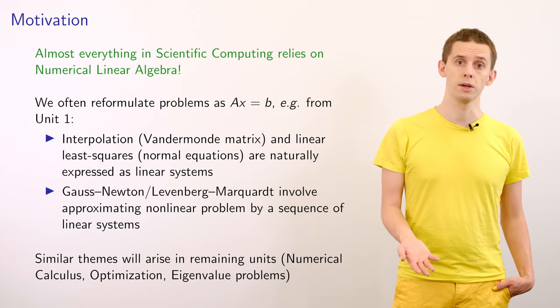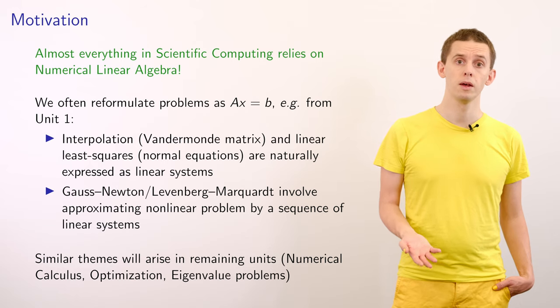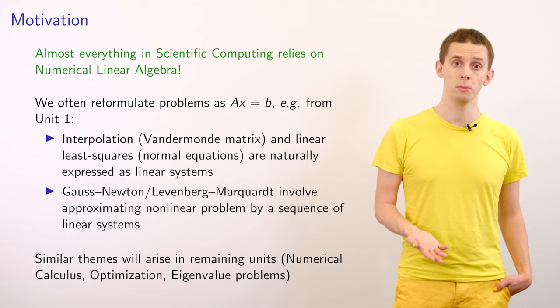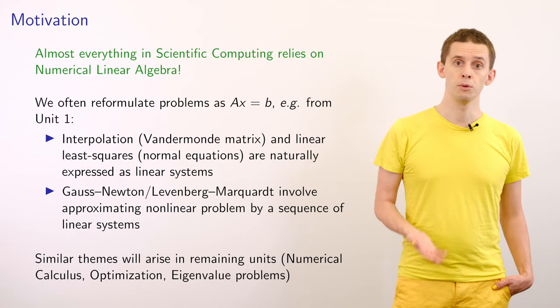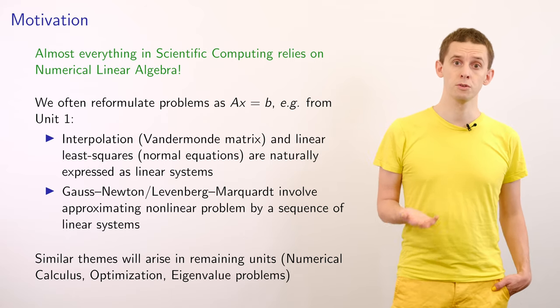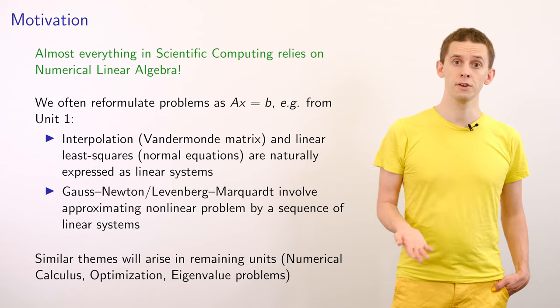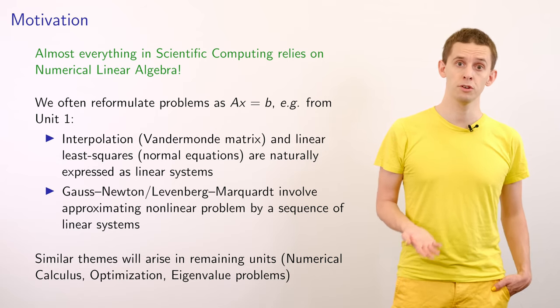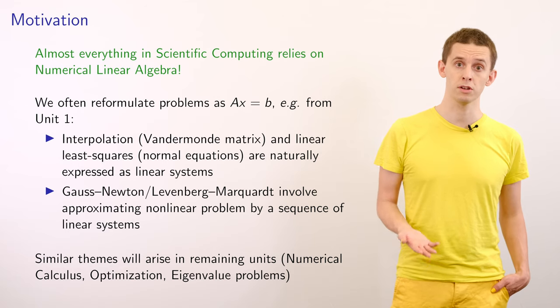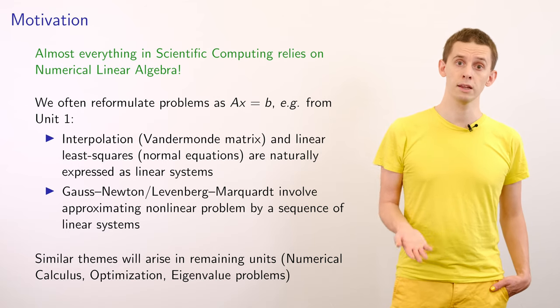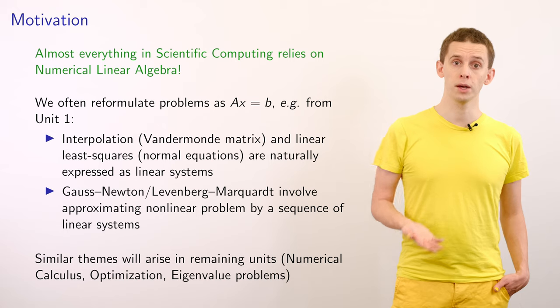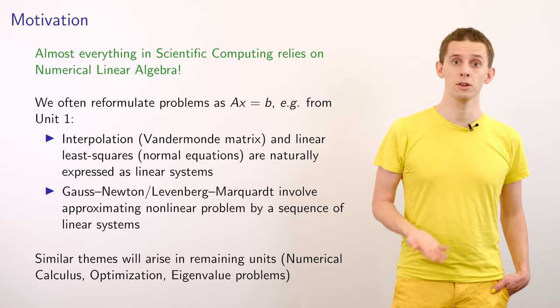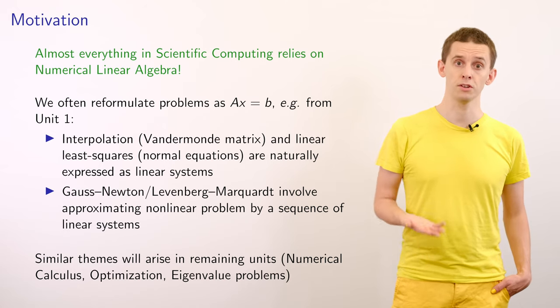Almost everything in Scientific Computing involves Numerical Linear Algebra, and we can often reformulate problems in terms of solving linear systems of the form Ax = b. We've already seen a number of examples of this throughout the course. In the data fitting unit, we found that we could reformulate polynomial interpolation in terms of solving Vandermonde matrix systems, and when we looked at linear least squares, we found that the normal equations naturally arose, that we could again solve using matrix algebra.